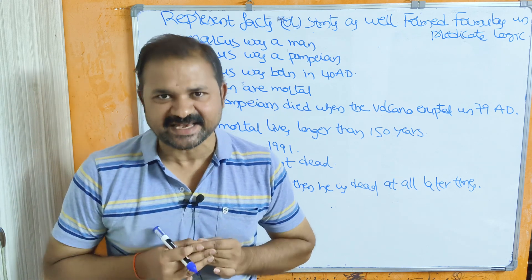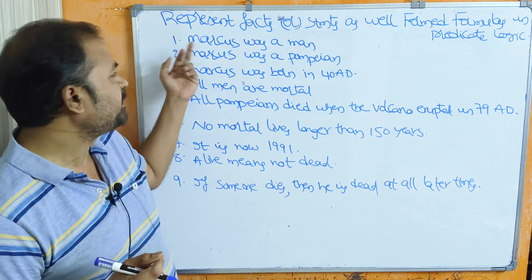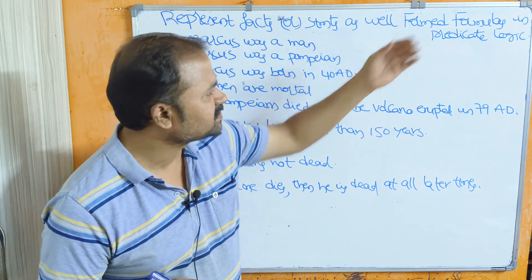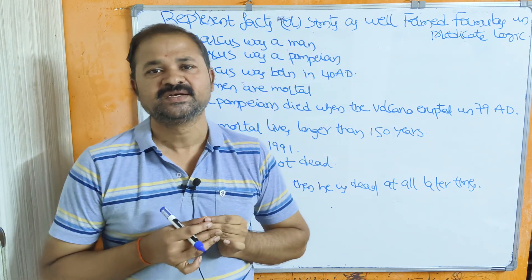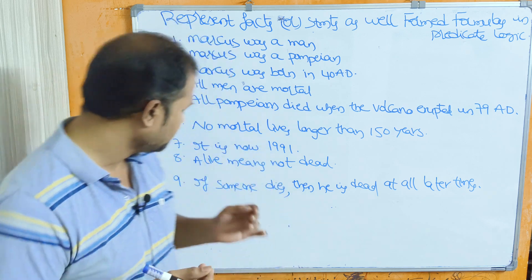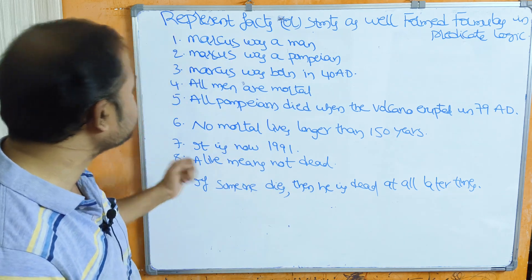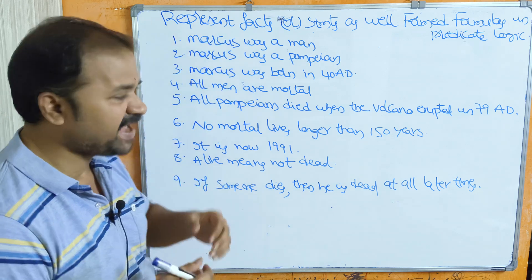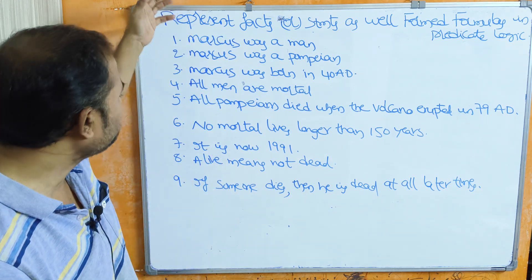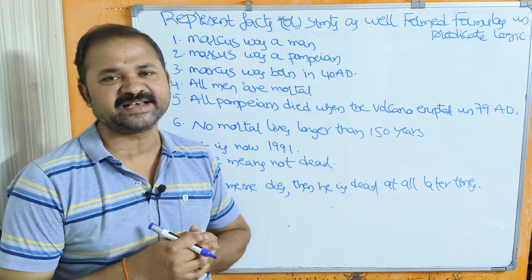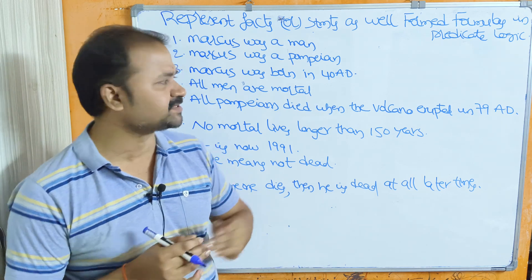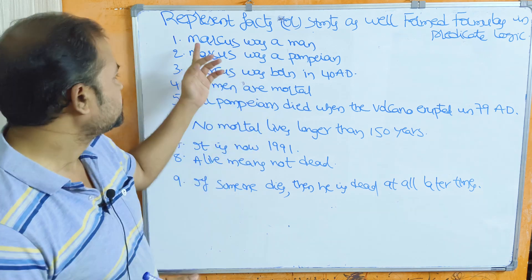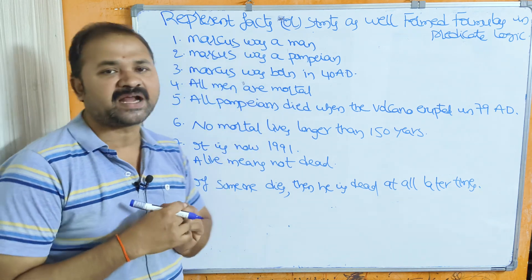Now let's see this example: represent the facts or statements as well-formed formulas in predicate logic. There are totally nine statements given, which can also be called as facts. We have to represent these statements as well-formed formulas using predicate logic.